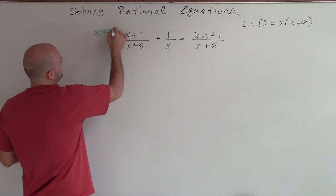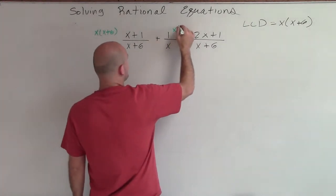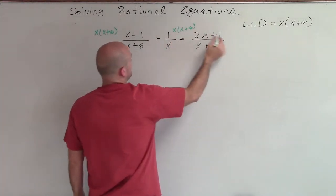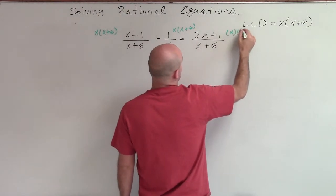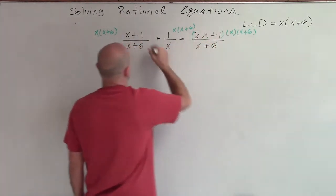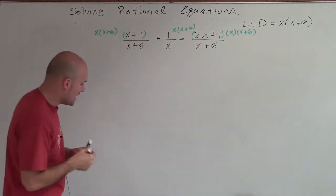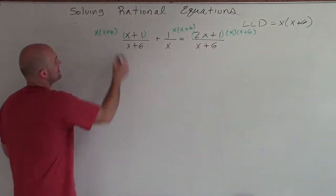So x times x plus 6, times x times x plus 6, times x times x plus 6. Let's put a little parentheses around these. So now by doing that, what we determine is here, my x plus 6s divide out.